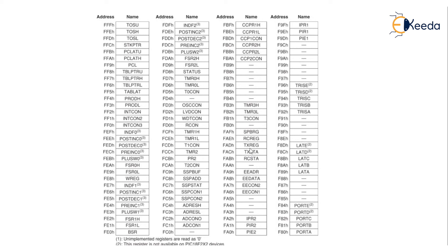For serial communication, SPBRG is used for baud rate selection. TXREG and TXSTA are for the transmitter, while RCSTA is for reception. These are the serial communication SFRs.